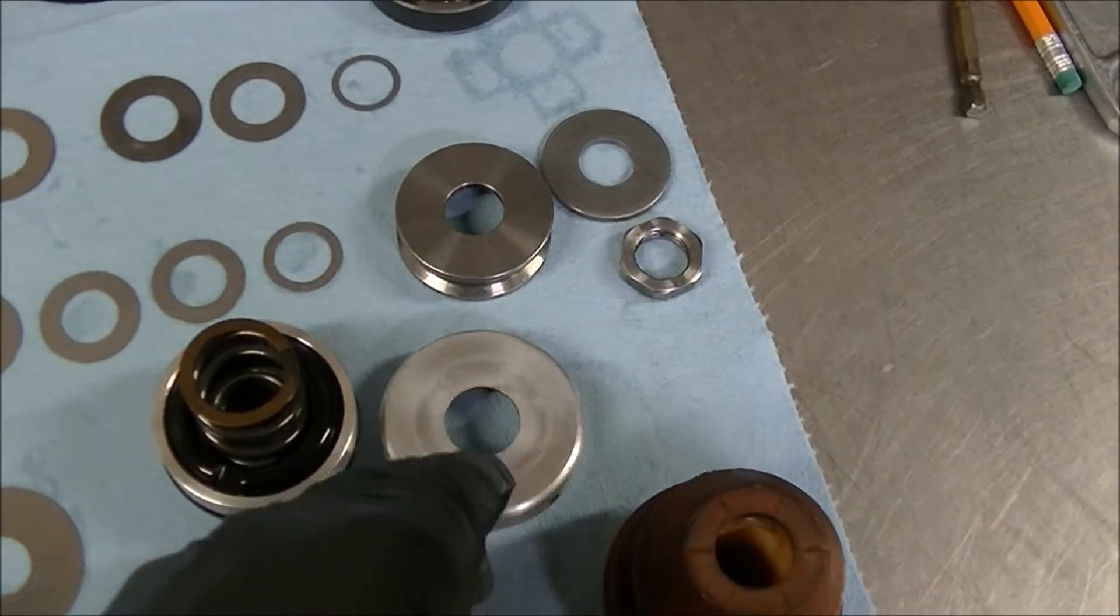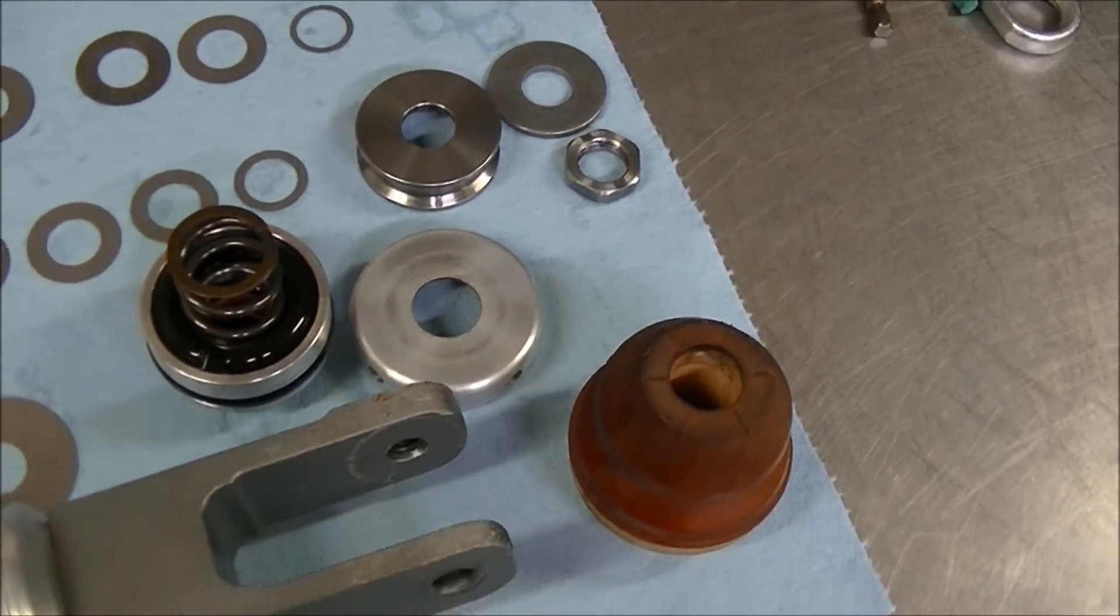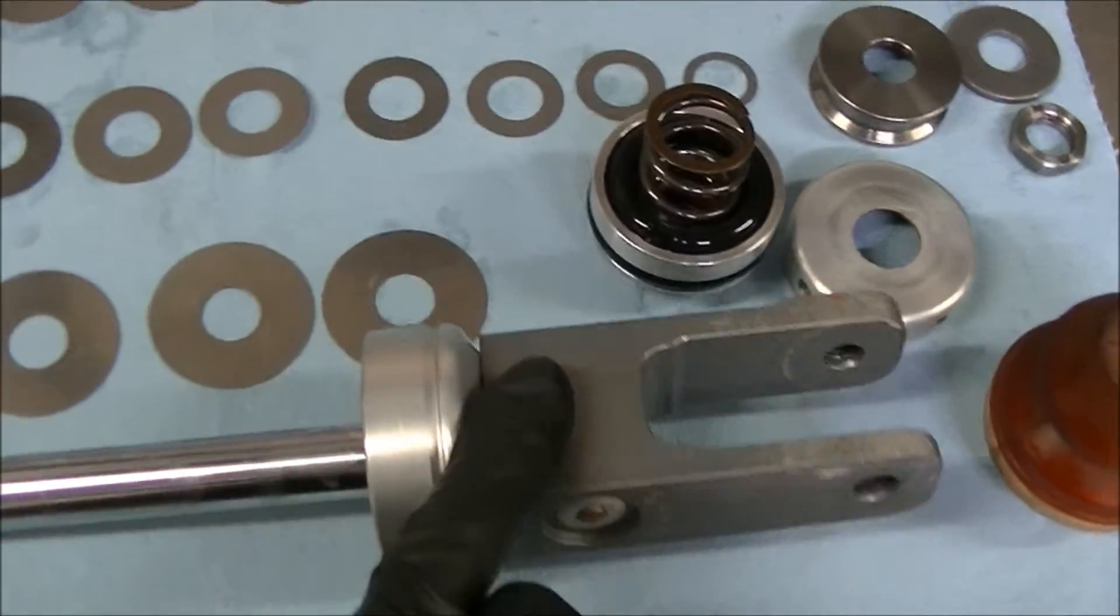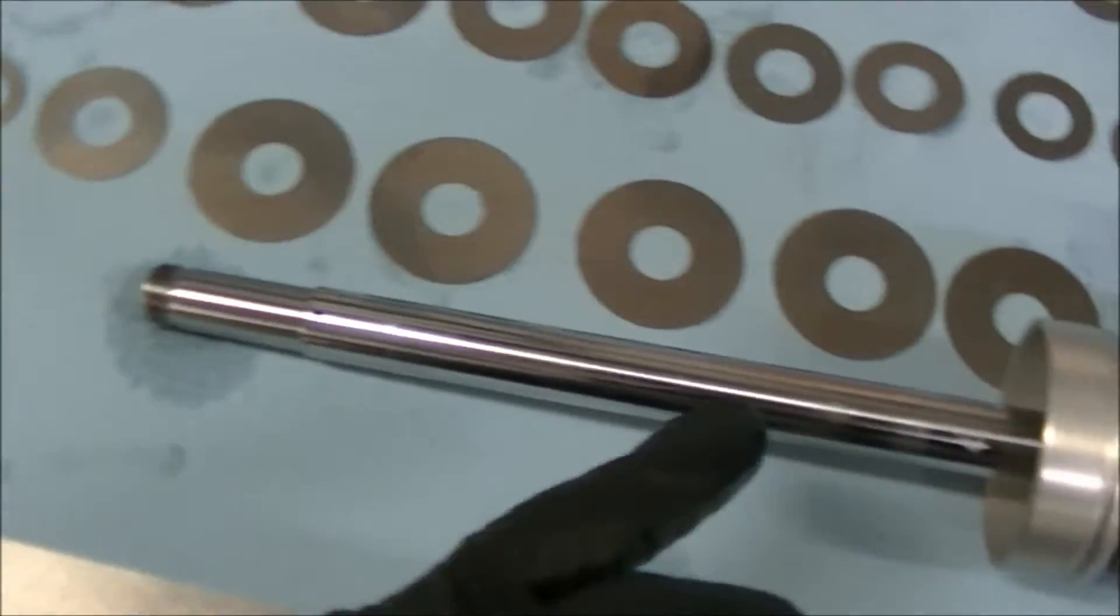And this is the dust cover or bump stop here. That's what the bump stop rides up against when the shock fully bottoms out. The shock clevis which pulls up the linkage there and your shock shaft.